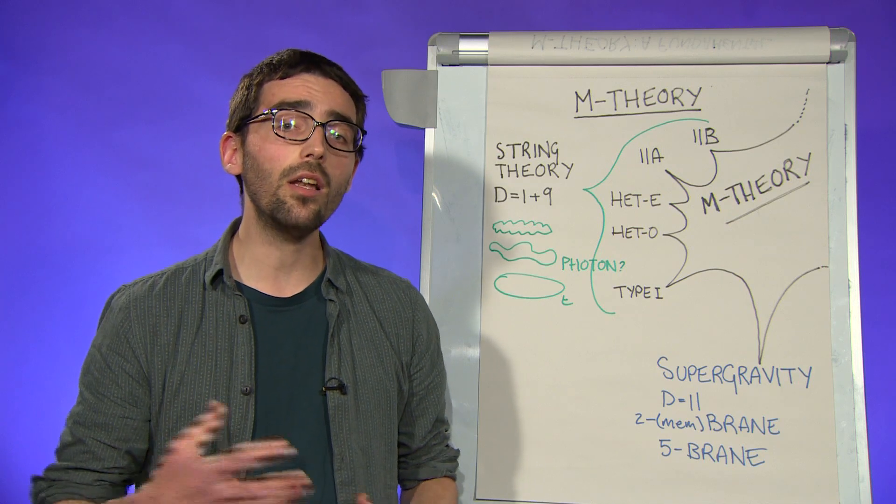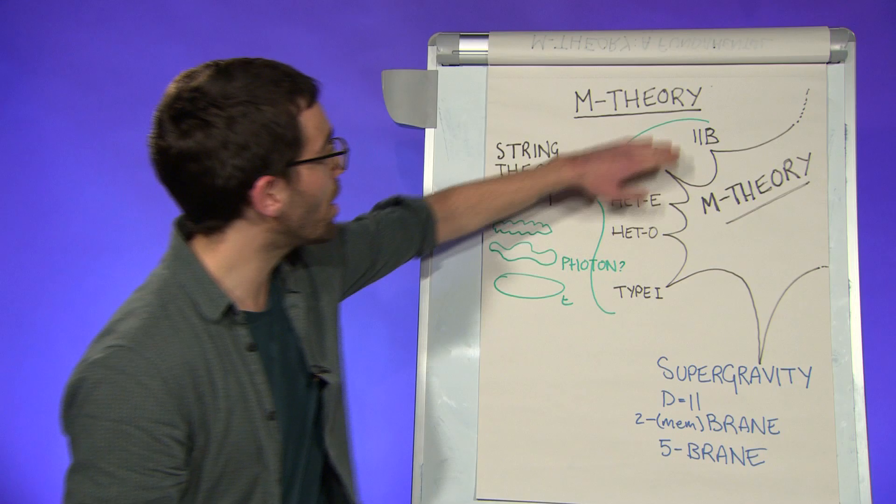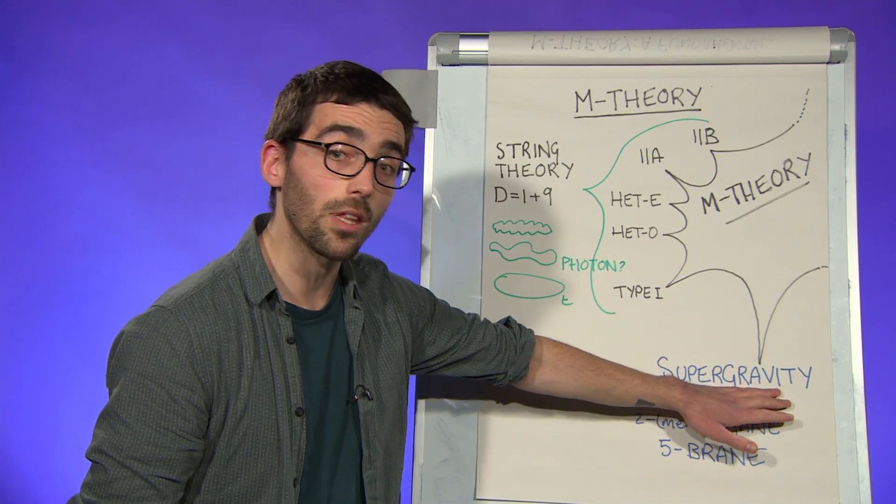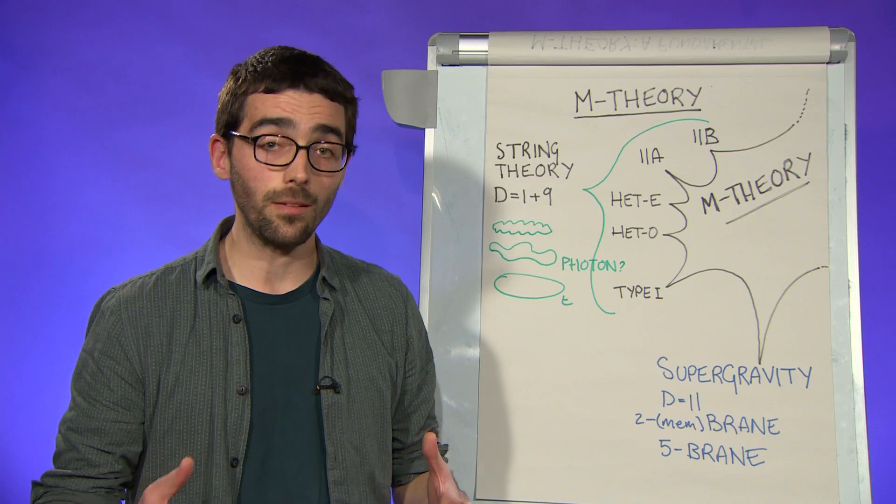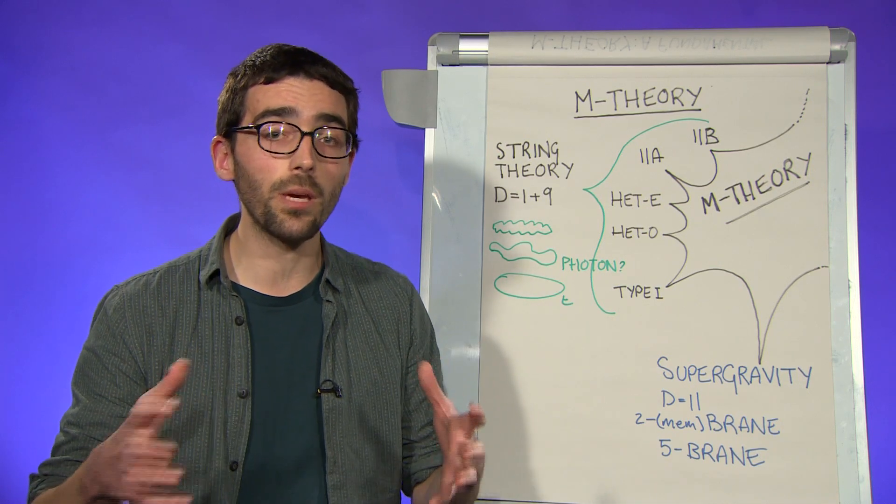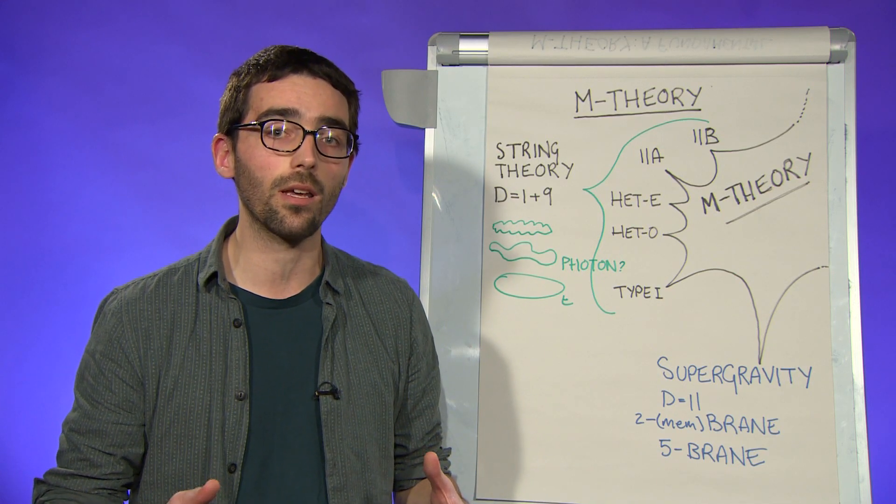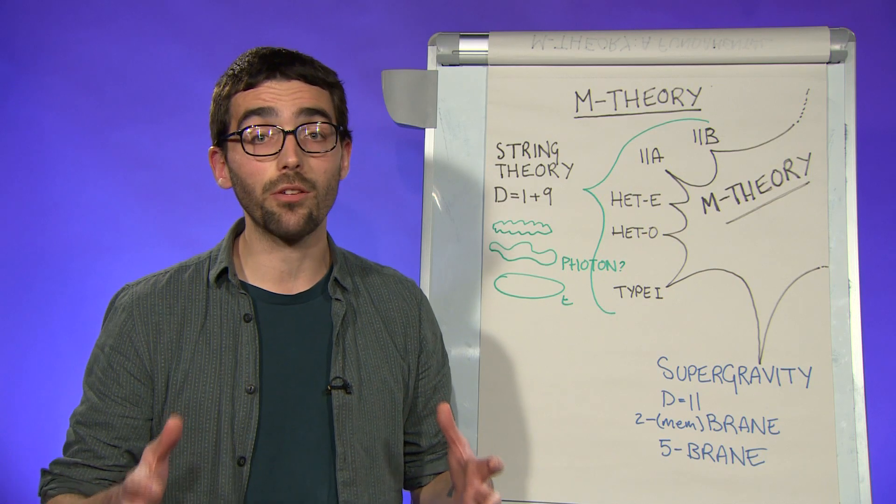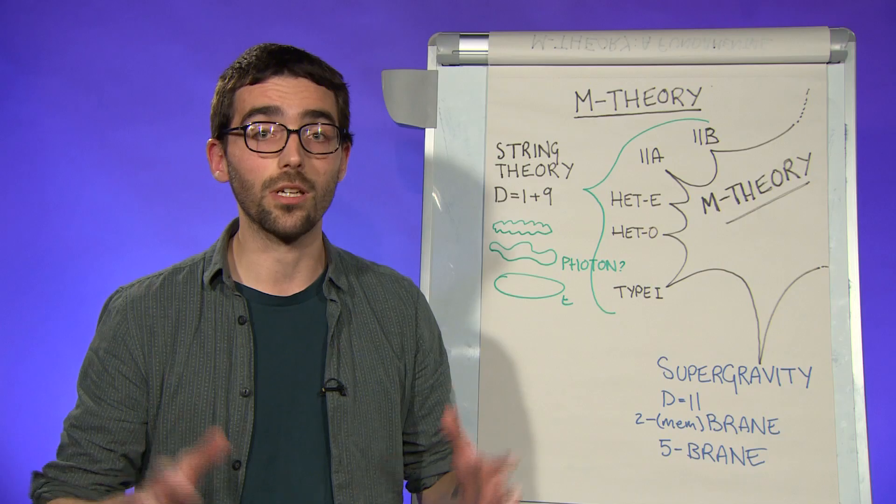However, in the early to mid-nineties, an intricate web of relations connecting these five string theories to the sixth theory of supergravity were gradually uncovered. We now actually think of these not as being separate, but just as being different corners of a single overarching framework, enigmatically dubbed M-theory. M-theory actually remains largely mysterious, and this is a major challenge for the future.